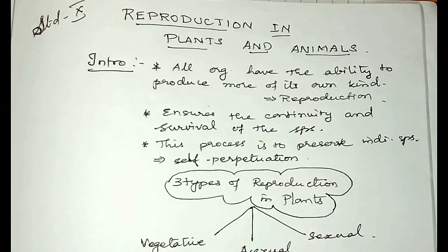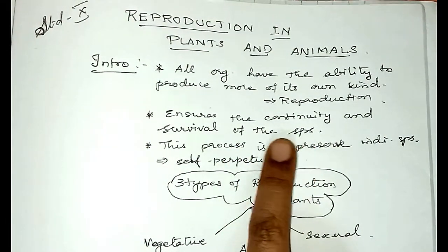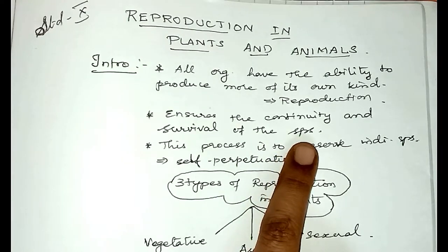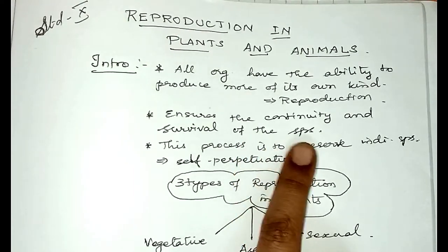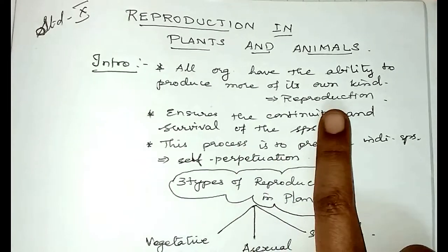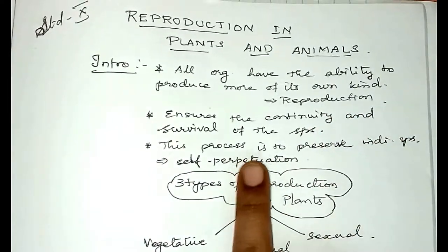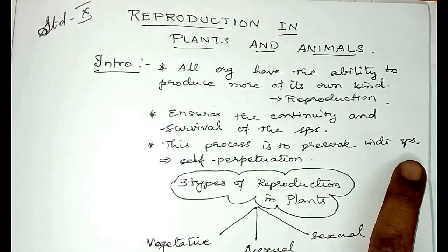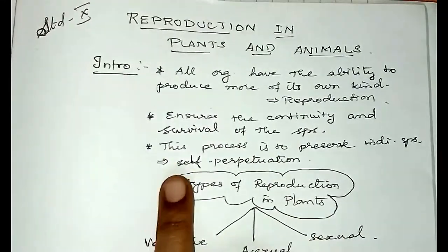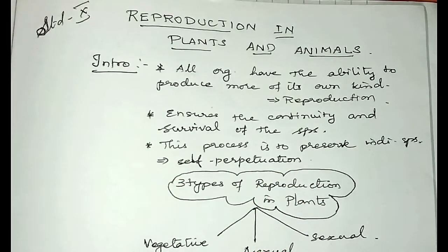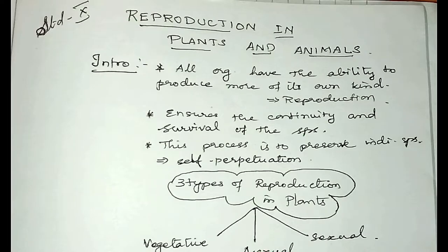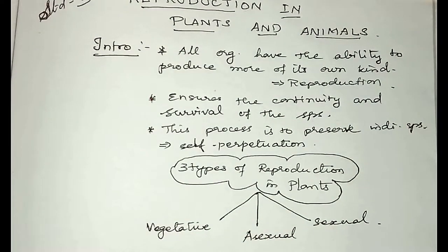Why should reproduction take place? Reproduction ensures the continuity and the survival of the species. What God has created in this world has been surviving till today because of reproduction. This process is to preserve the individuals and is called self-perpetuation. There are three types of reproduction in plants: namely, vegetative reproduction, asexual reproduction, and sexual reproduction.